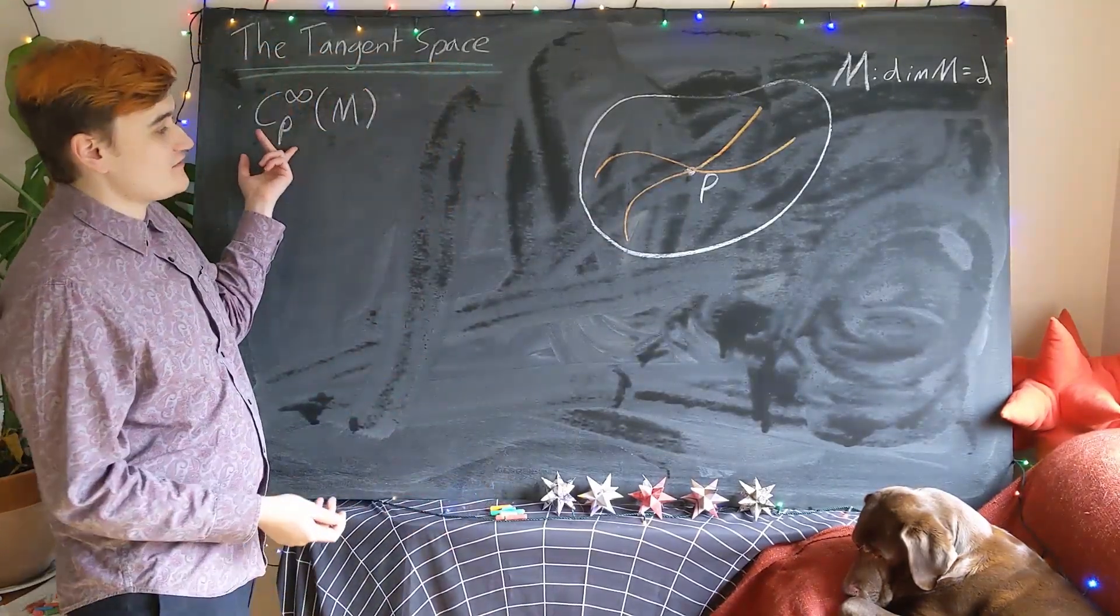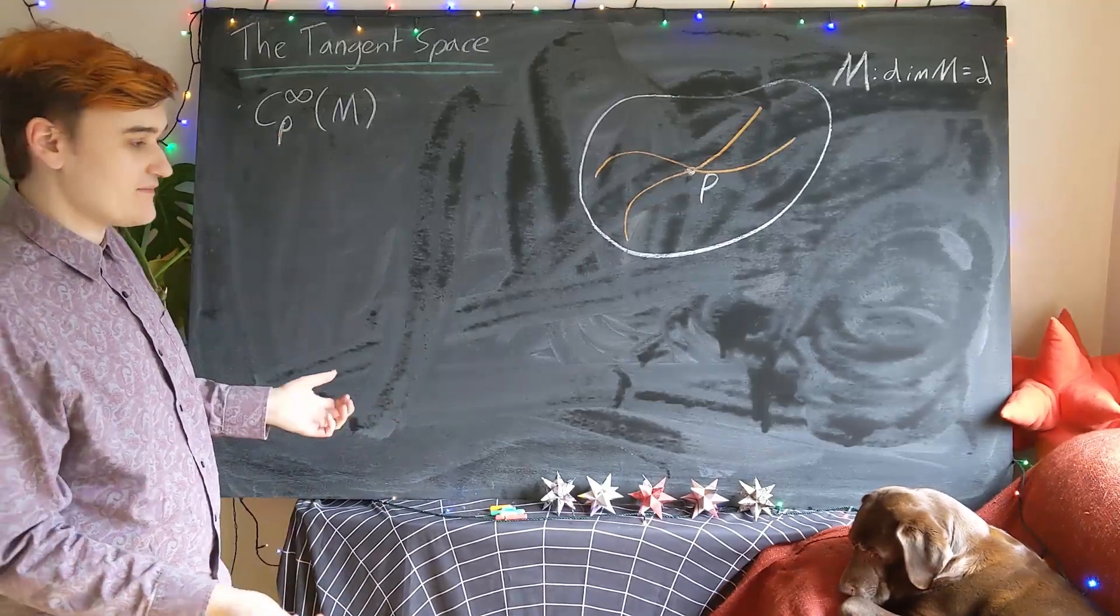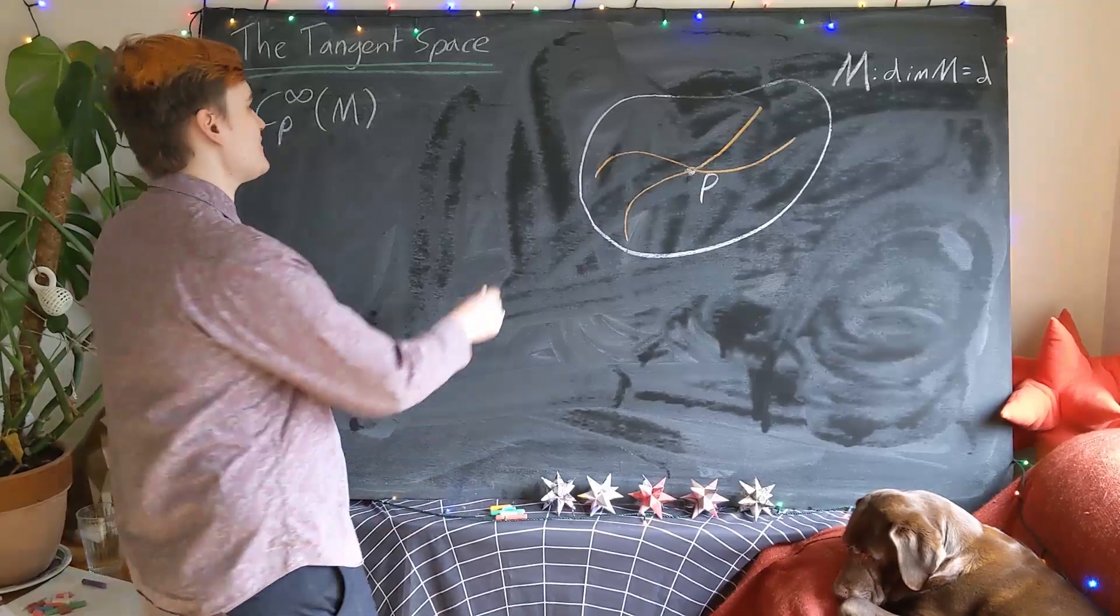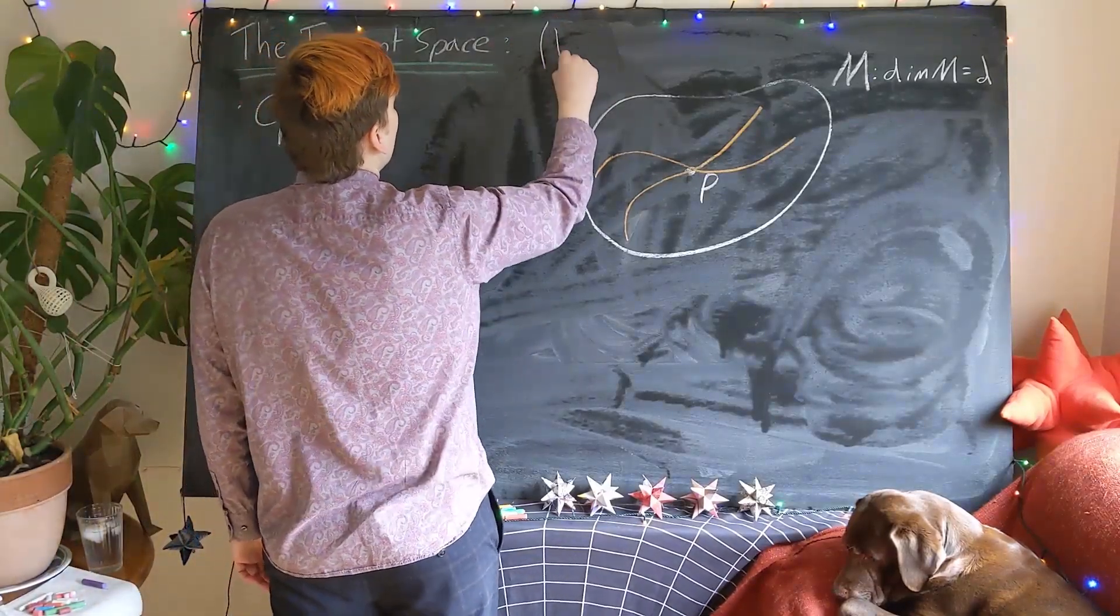So this set by itself is actually a vector space. It's not the vector space we want, but it's going to be a useful vector space for us. I'll just briefly remind you that by a vector space,